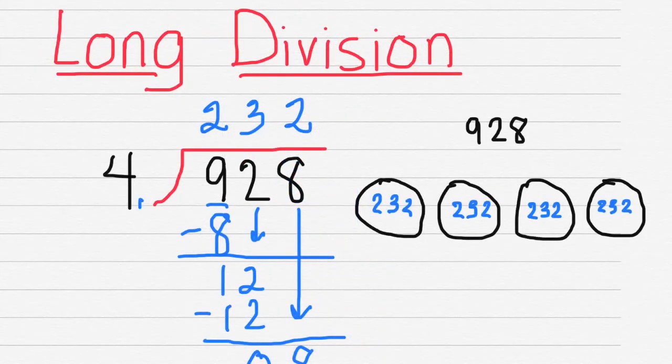So again, I'm taking my total quantity of 928 and I divide it into 4 groups evenly. And each group would get 232.